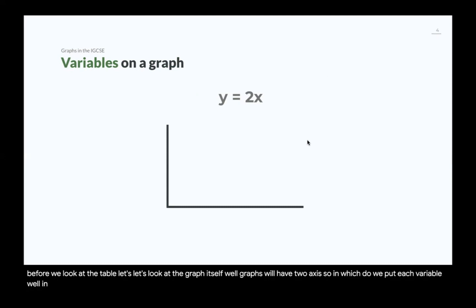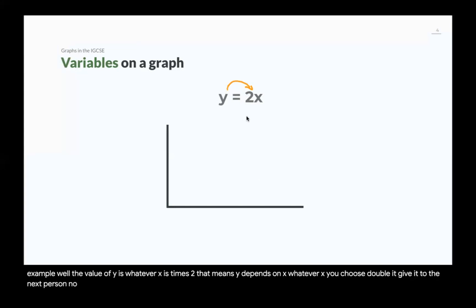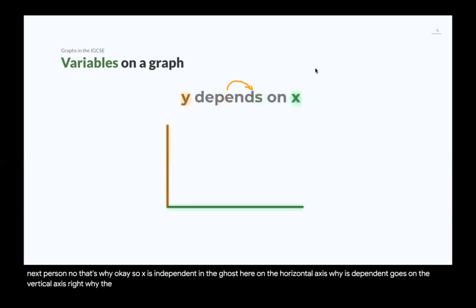Well, in maths, we have this type of question, y equals 2x, and then you have to plot it. What's the value of y, for example? The value of y is whatever x is times 2. That means y depends on x. Whatever x you choose, double it, give it to the next person. No, that's y. So x is independent, and it goes here on the horizontal axis. y is dependent, goes on the vertical axis. y depends on x.